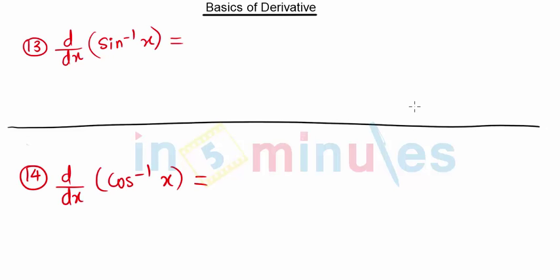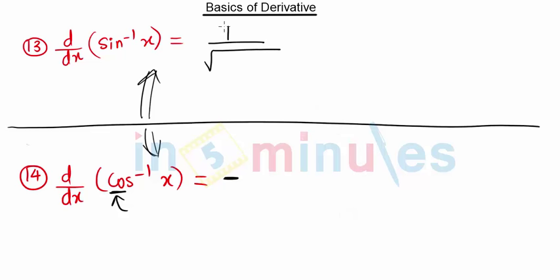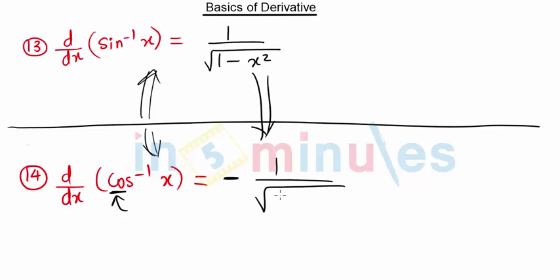From now on, whatever is written above, the same formula applies below but with a negative sign because of 'co'. The derivative of sin⁻¹ x is 1 upon root of (1 minus x²). The derivative of cos⁻¹ x is the same value — 1 upon root of (1 minus x²) — but since it starts with 'co', it is negative.